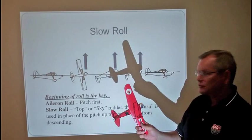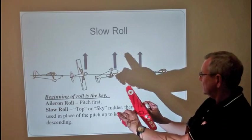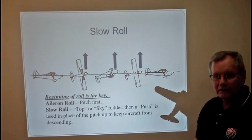Then as you go to the second knife edge, now you're switching your feet to the other top rudder. Then as you're rolling back around, you're finishing back in the level attitude that you need to maintain level flight.